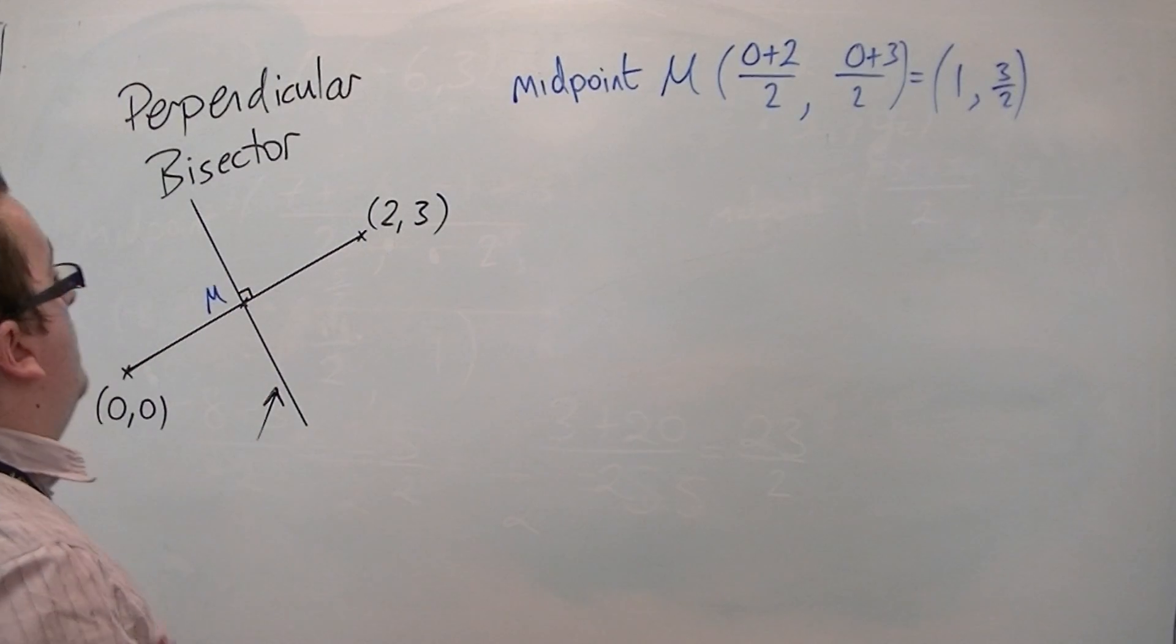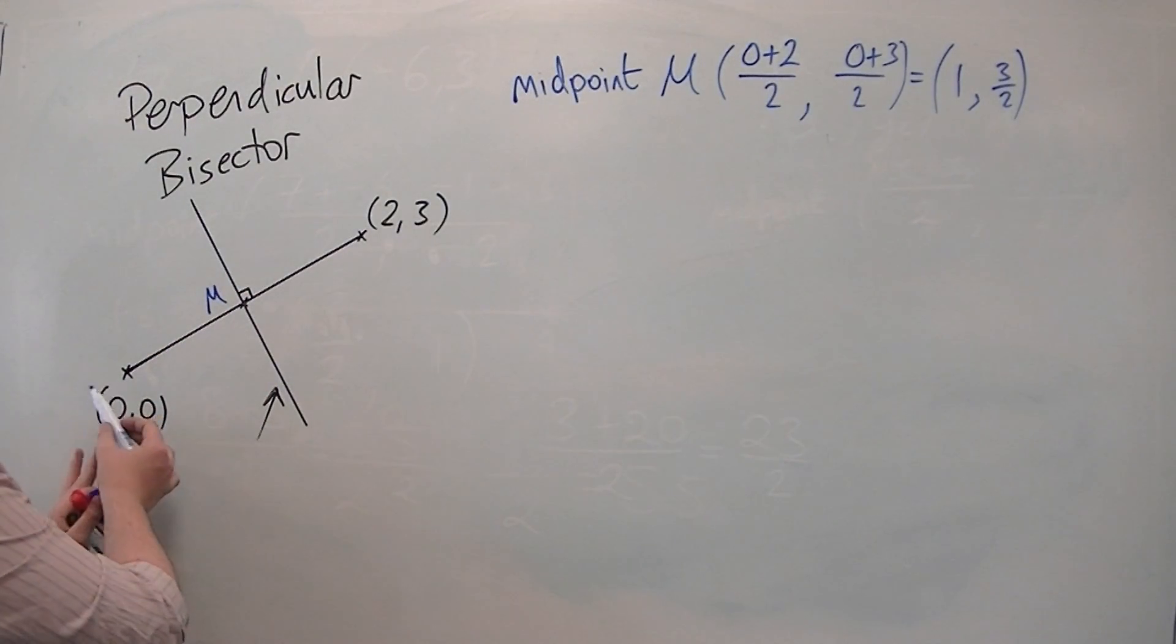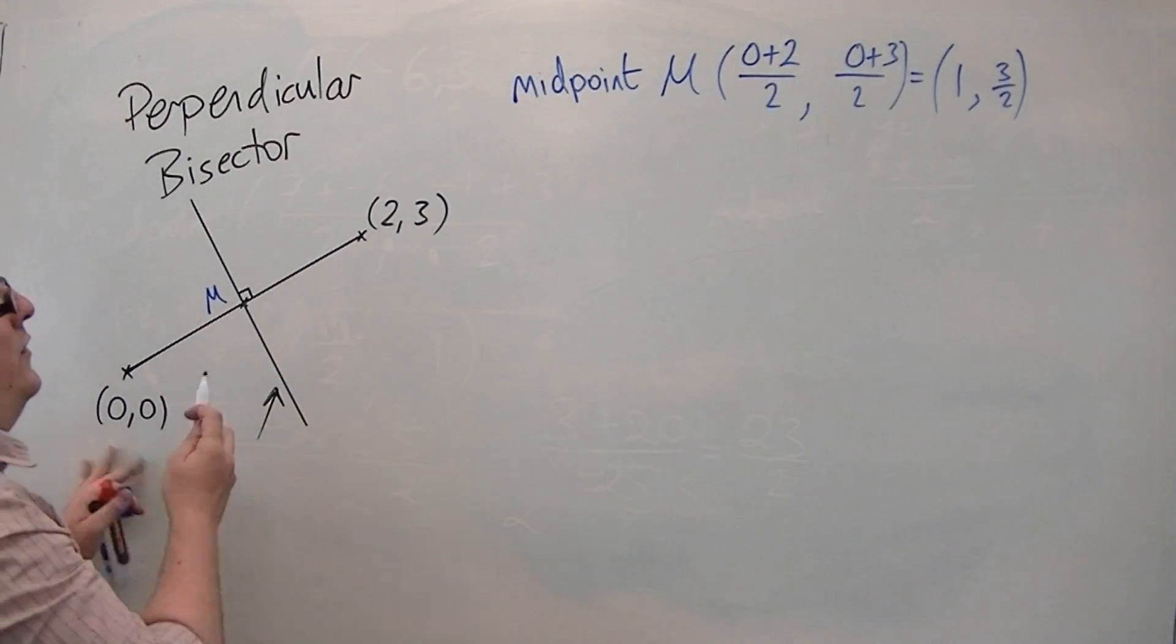So the midpoint M has the coordinates 1, three halves. I also need to find the gradient of this line.